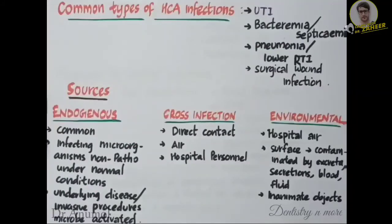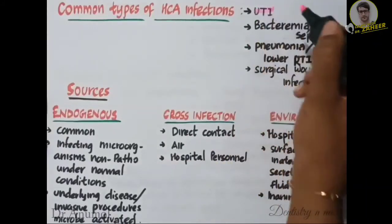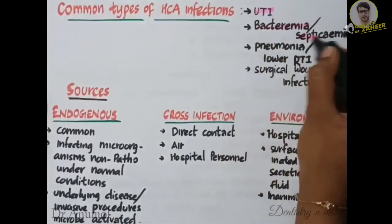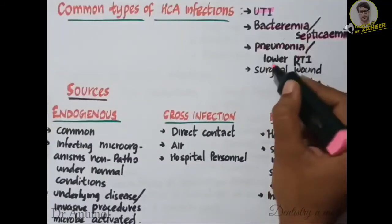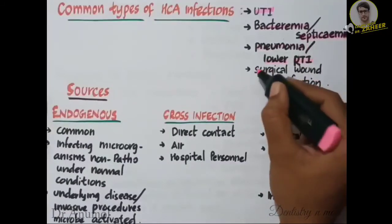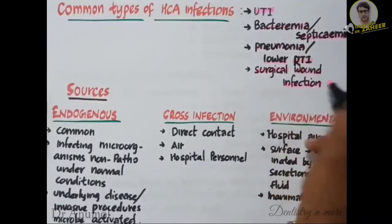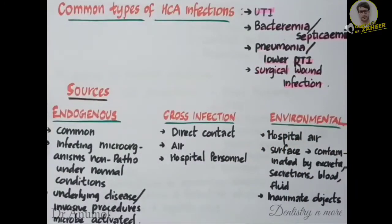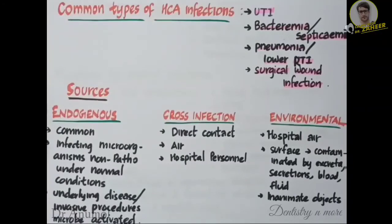The common types of healthcare-associated infections are urinary tract infection, bacteremia or septicemia, pneumonia or lower respiratory tract infection, and surgical wound infection. For urinary tract infection, the major risk factor is patients with indwelling urinary catheters, which might be placed under poor aseptic conditions. The common infecting organisms are Enterococcus faecalis and Klebsiella pneumoniae.